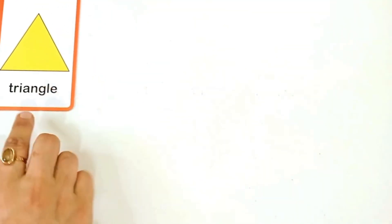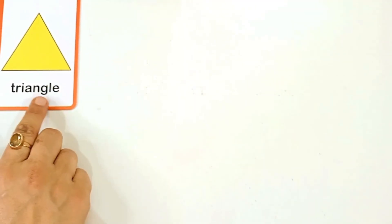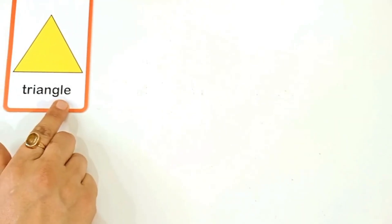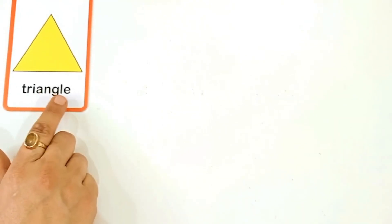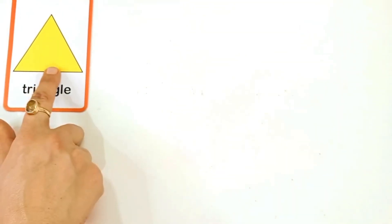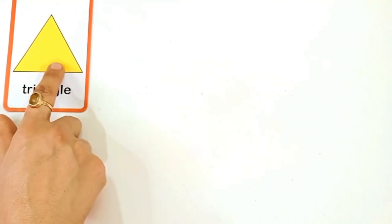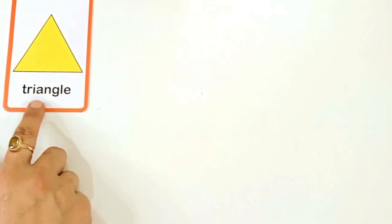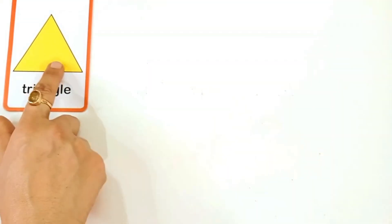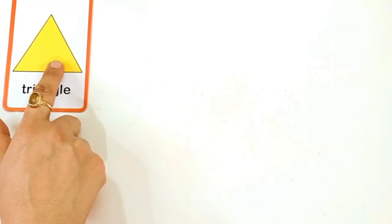T for triangle. T-R-I-N-G-E-L-E triangle. This is triangle shape. And the color is yellow color.